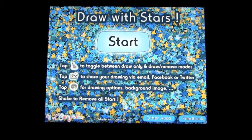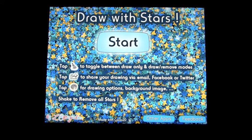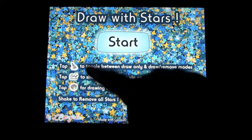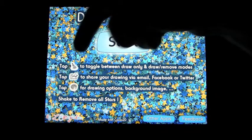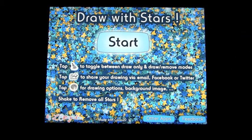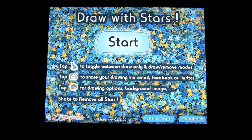This app is called Draw with Stars, and it is basically a creative program where you will create things on the screen with your finger using a number of stars, kind of like the background you see here. The start screen tells you some of the functions: the brush toggle on/off to remove and draw, tap the arrow to share your drawings via email, Facebook, or Twitter. You can tap the moon for drawing options, background image, and you can shake the device to remove all the stars.